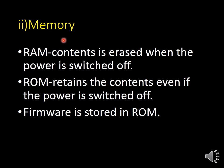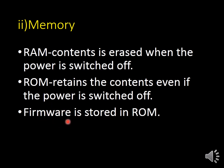The next component is memory — two types: RAM and ROM. RAM means random access memory; when the power is switched off, the contents are erased, so it is temporary storage. ROM means read-only memory; it retains contents even when the power is switched off, so data is stored permanently. Our software is stored in ROM memory only — in an embedded system, this is called firmware. Firmware is stored in ROM.